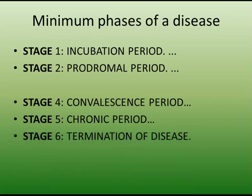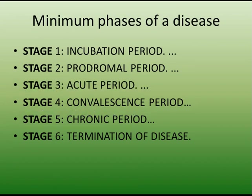The final stage of the disease is the termination of disease. Among all the stages, we skipped the third stage — that is the one for which the majority of patients visit a physician. That stage is the acute period. Putting the periods in order: first is incubation, second is prodromal, third is acute, fourth is convalescence, fifth is chronic, and the final is termination of disease.